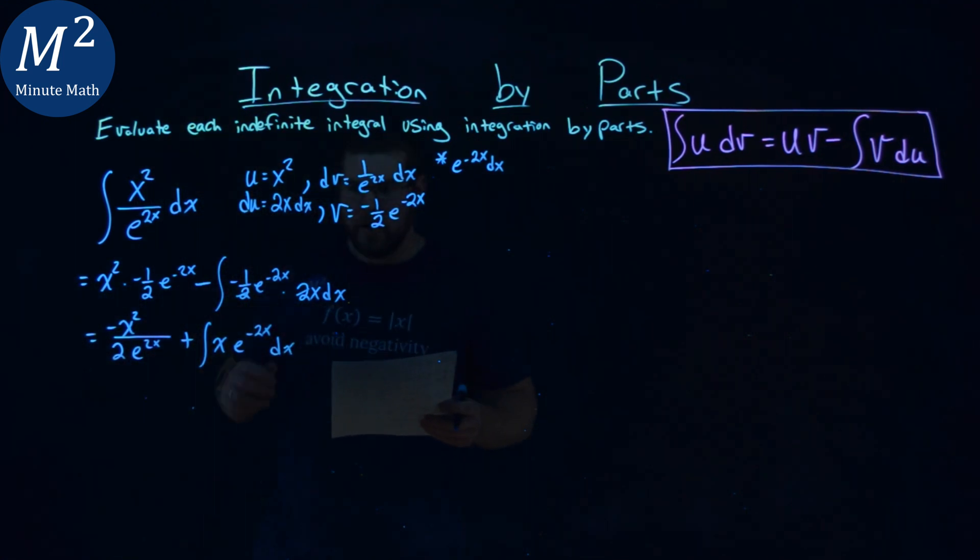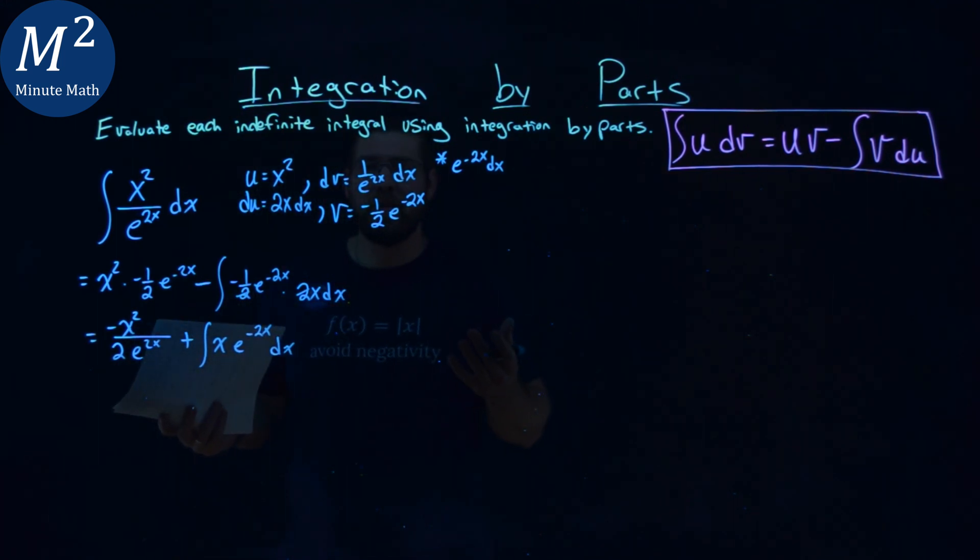So at this point, you might be a little confused on how we can integrate this. Well, we need to do integration by parts again. u, dv, du, v.